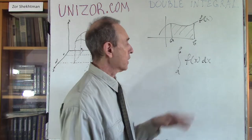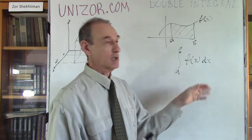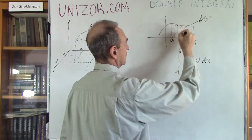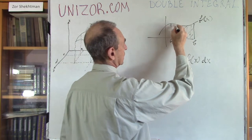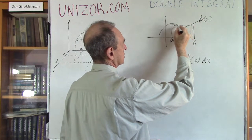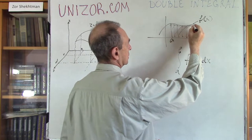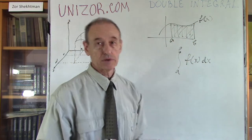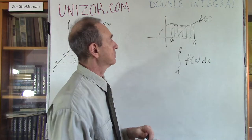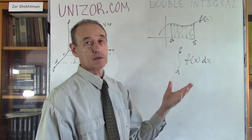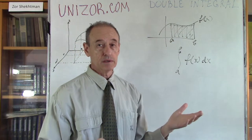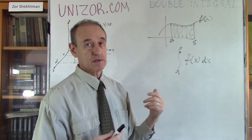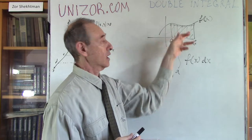The way I define this is basically as a sum of rectangles built under the function's graph. The sum of the areas of these rectangles actually approximates the area under the curve.